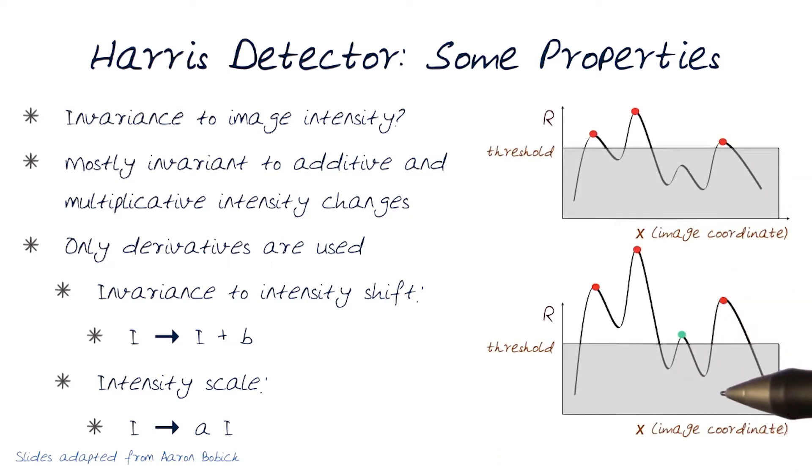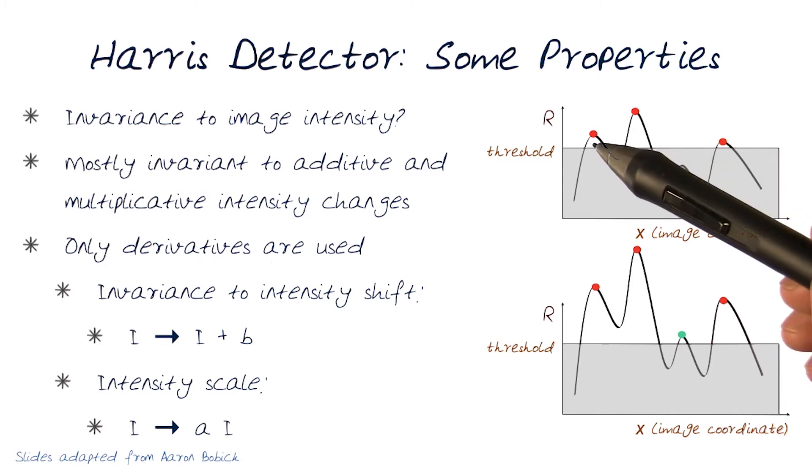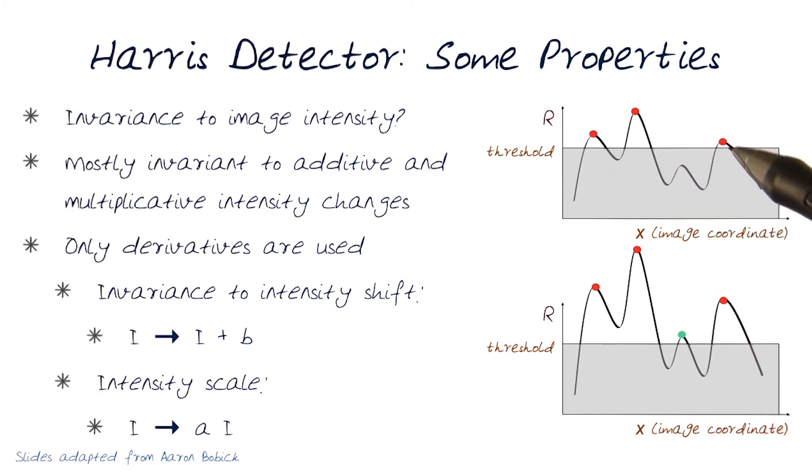This is demonstrated by our example, where I look at the response function R and it depends on where I threshold. Because if I threshold at that level, and these two points are the ones that I'm looking for, I'll still detect them.